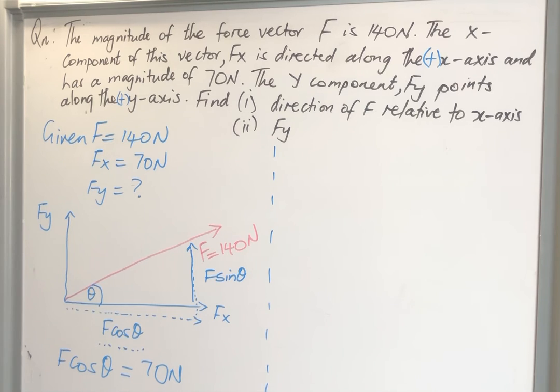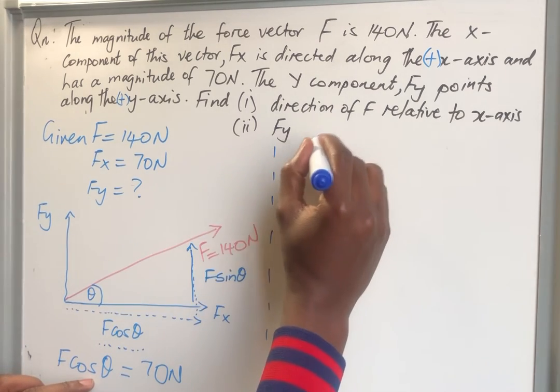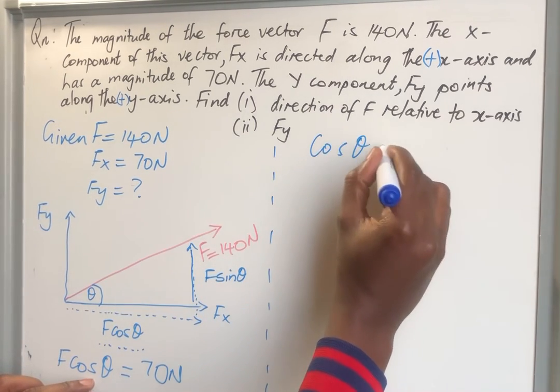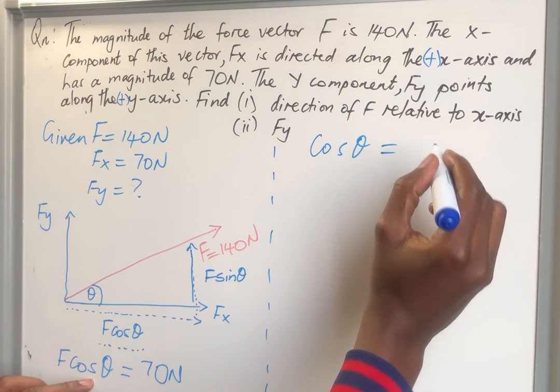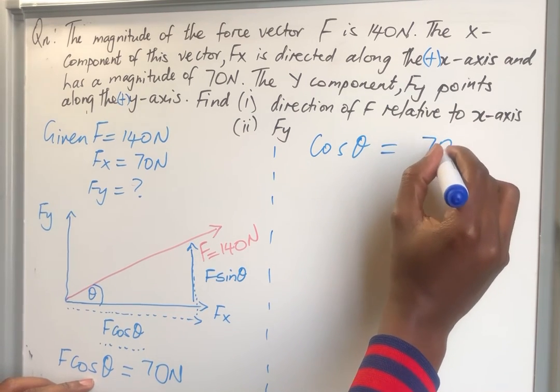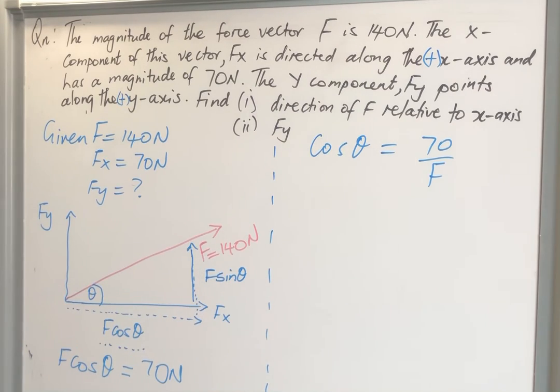That's what they mean. F cos theta is equal to 70 newtons. This line right here. So from this now you can make theta subject of the formula. If I'm to do that, I will have to say cos theta equals—I divide both sides by F—equals 70 divided by F, as you can see there.